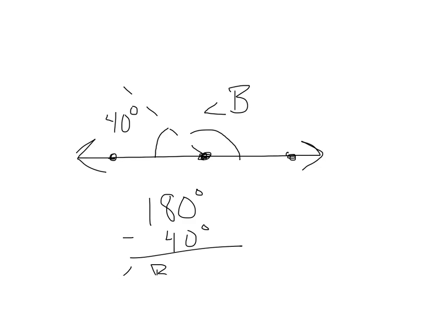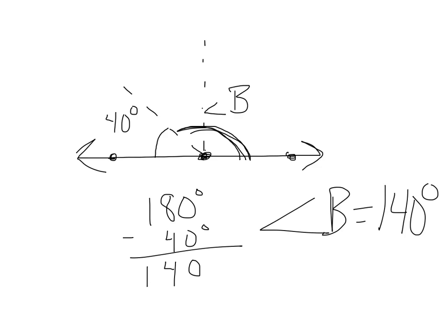And 1 minus nothing is 1. And so I know that angle B equals 140 degrees. And that makes sense because 140 degrees is an obtuse angle. This angle opens up larger than 90 degrees. A 90 degree angle would be right here. So I know that my answer should make sense.